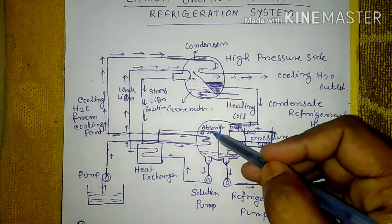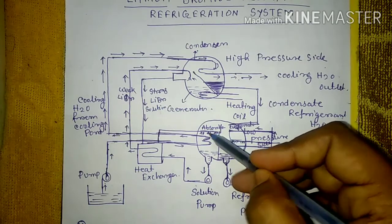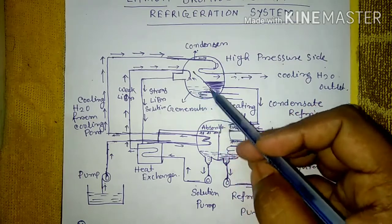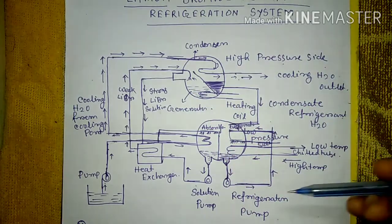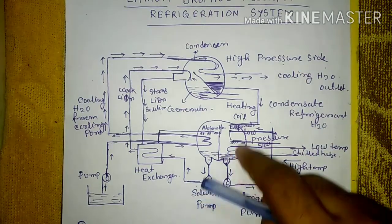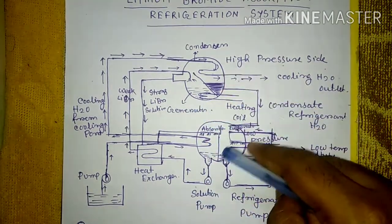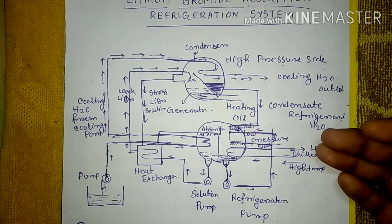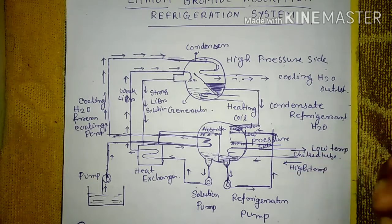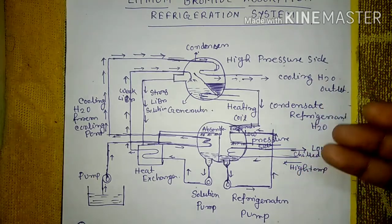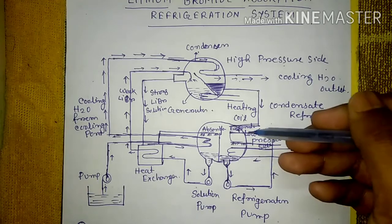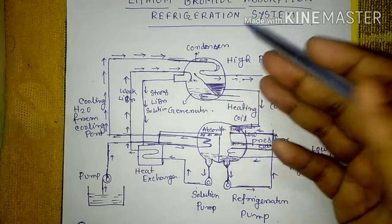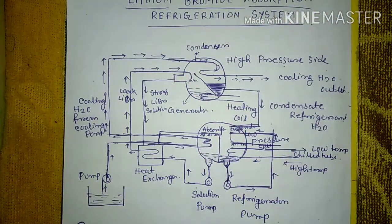On the low pressure side: the evaporator and absorber are present. On the high pressure side: the condenser and generator are present. So in summary, two cylindrical cells — one low pressure side containing the evaporator and absorber, one high pressure side containing the condenser and generator.